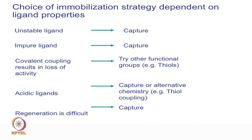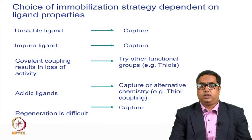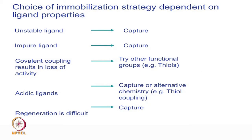The choice of immobilization strategy depends on the kind of molecule available. If we have an unstable or impure ligand, we go for capture. If covalent coupling leads to loss of activity where the analyte is not binding, we identify a capture process instead. Molecules with a PI very close to the acidic range (2 or 3) or those that are difficult to regenerate are also preferred for a capture process.